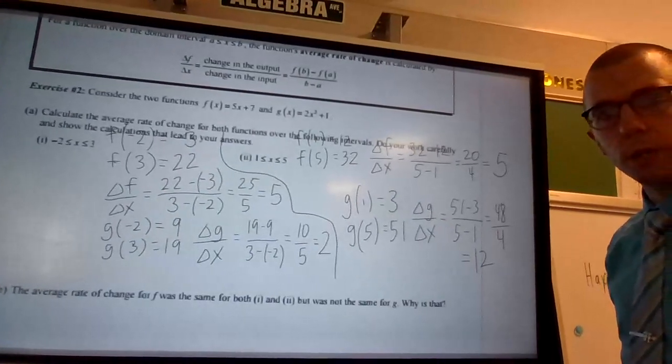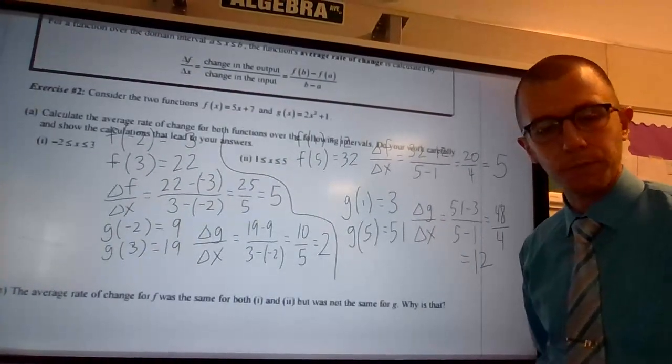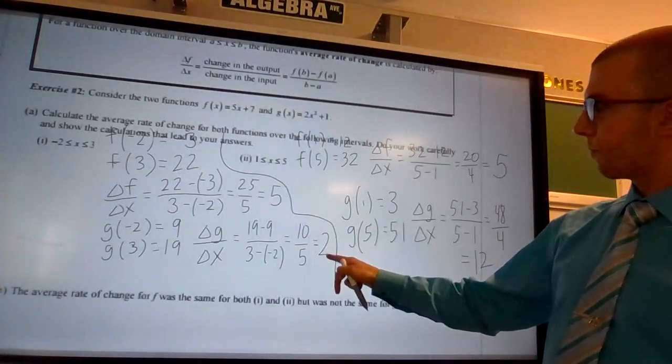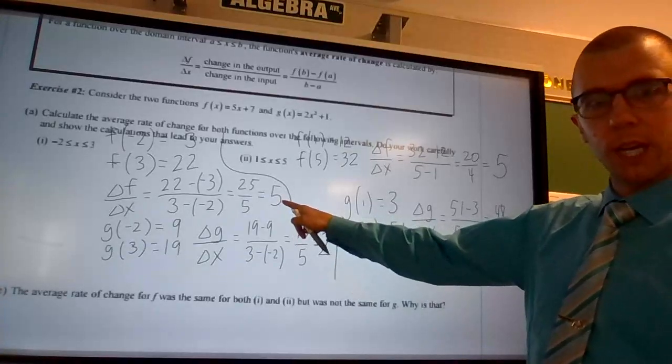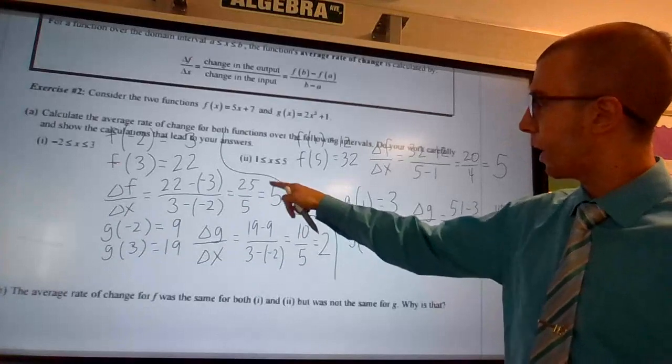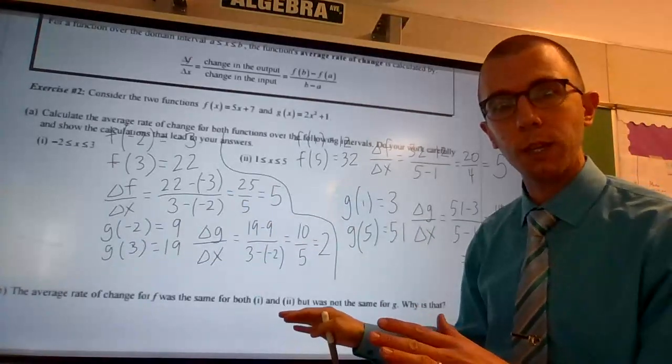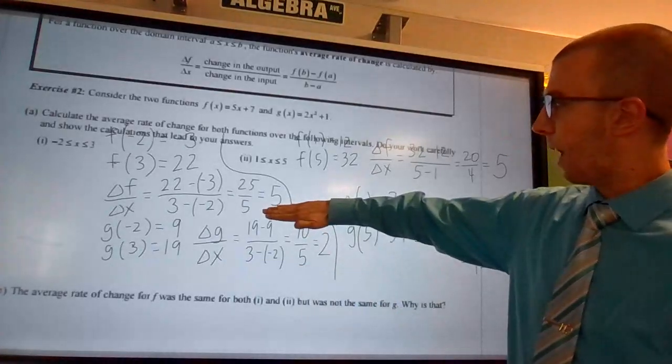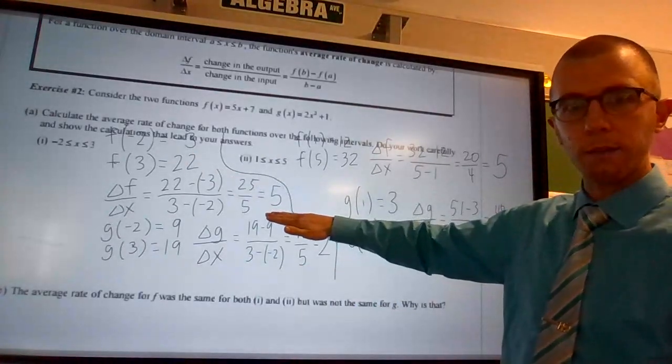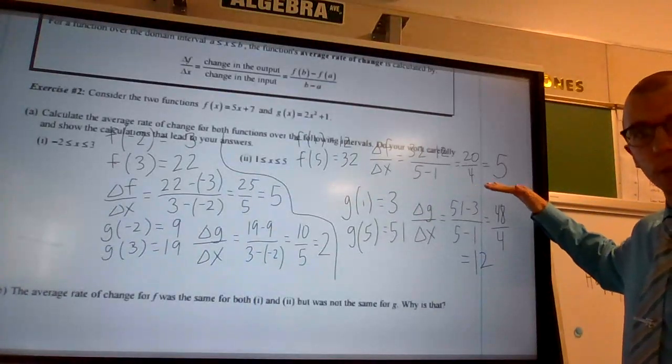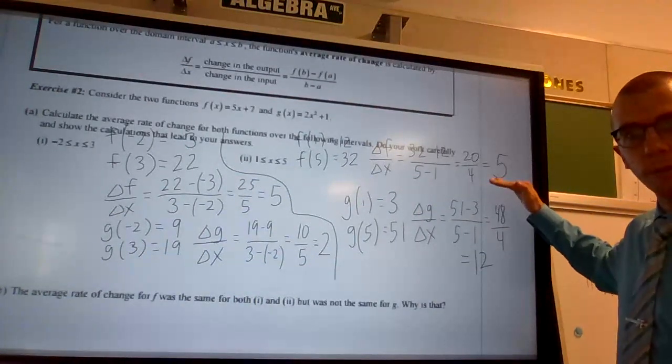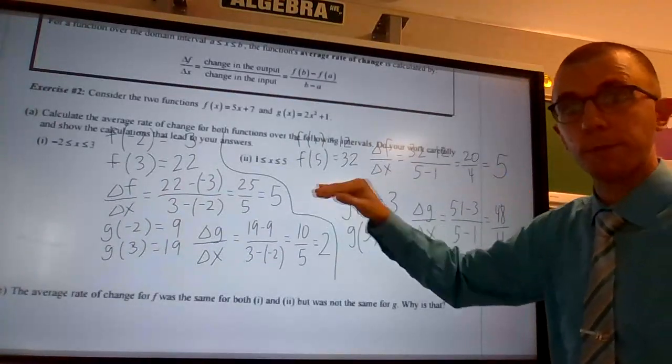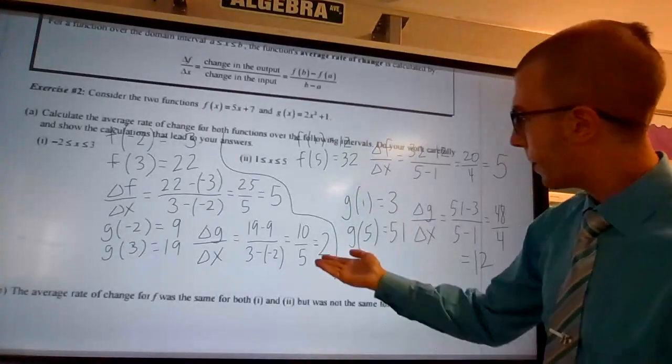So what do we notice here? A couple things that we should notice. This is what I was looking for. The change in f, or that average rate of change, not just the change in f, but we took into account the x interval. So that average rate of change for f of x in our first interval was 5. The average rate of change for f of x in our second interval was also 5. So the average rate of change in those two intervals was the same for f of x. But what about g of x?